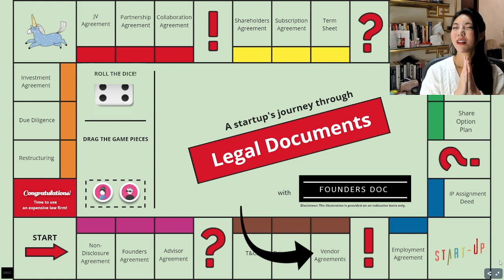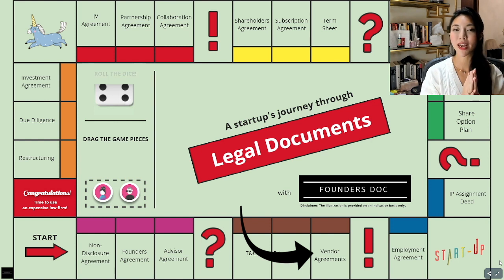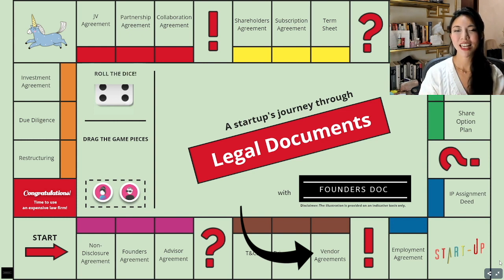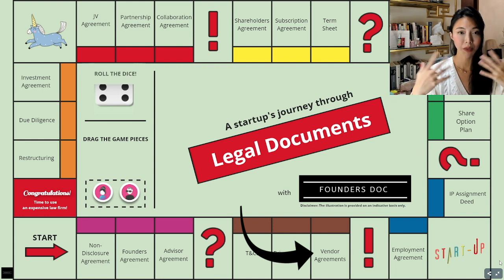Number two: consider trying to achieve an exclusive relationship with your vendor or supplier. Depending on the type of industry you're in, you might consider having an exclusive relationship to ensure that you maintain a top-notch business value proposition to your end consumers. Number three: make sure your confidential information and IP will always belong to you. That can be achieved by having a robust confidentiality provision as well as an IP clause that tells vendors that whatever is produced as part of the agreement belongs to you.